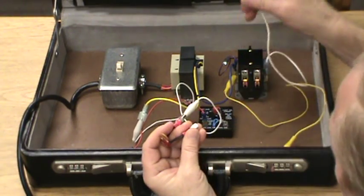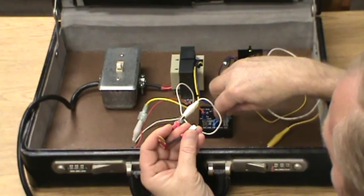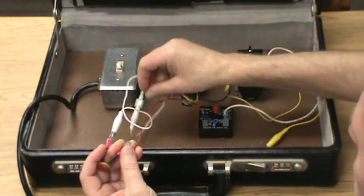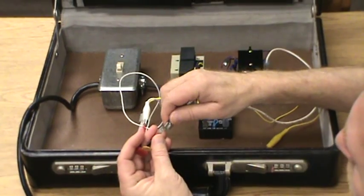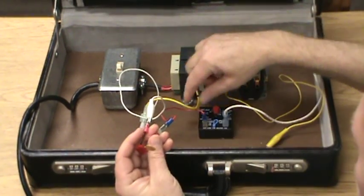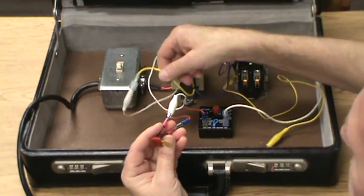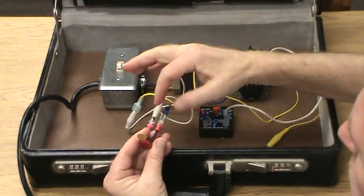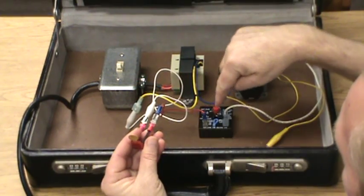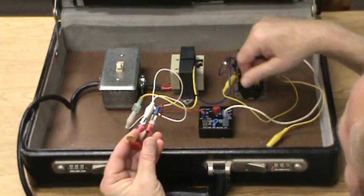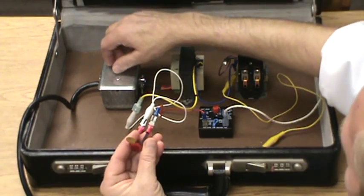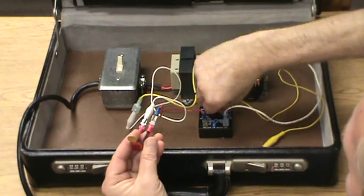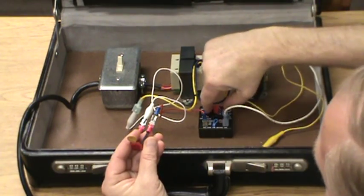I'm going to wire in this delay-on-make time delay. What we're doing is coming out of the transformer secondary, going to our protection - this resettable fuse - and then it's going through this time delay circuit here. I'll restore the power and advance this timer so it will bring on the contactor coil.